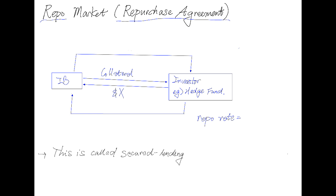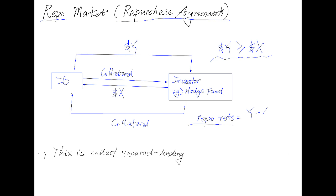This transaction is very short term. Usually the investment bank would have to buy back the collateral in about 30 days. The investment bank agrees to buy back the collateral for an amount Y dollars, where intuitively Y would be at least equal to or greater than X. So the repo rate can be calculated simply as (Y minus X) over X percent.